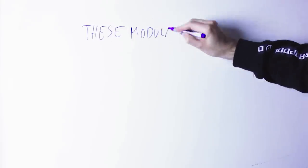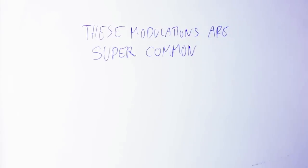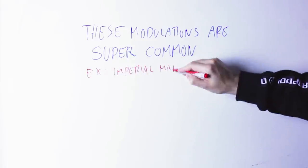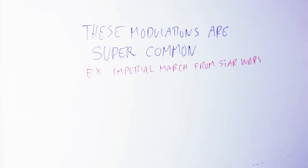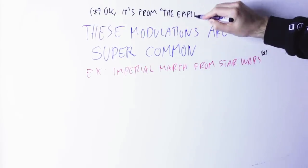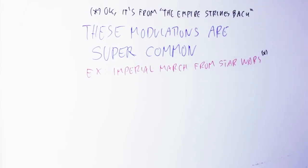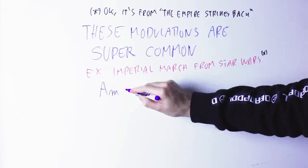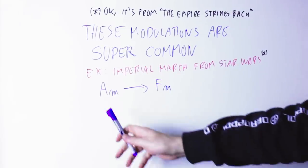Modulations that use this kind of chromatic mediant motion exist all over the place. A very famous example is in the Star Wars soundtrack in the Imperial March. Just at the very beginning of the theme you hear a chord progression that is the same as we've just seen, only with minor chords. So A minor to F minor.